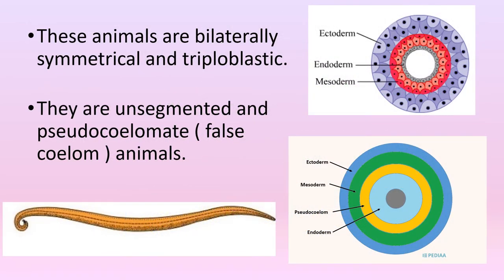These animals are bilaterally symmetrical and triploblastic. By bilaterally symmetrical, we mean that this will be the approximate line of symmetry. By triploblastic, we mean that they have all three germ layers: endoderm, ectoderm, and mesoderm.